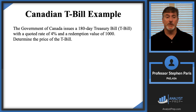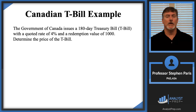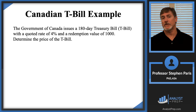Suppose that the Government of Canada issues a 180-day Treasury bill — that's a T-bill — with a quoted rate of 4%, a redemption value of $1,000. Our question is to determine the price of the T-bill.